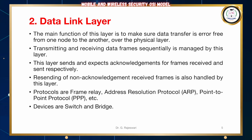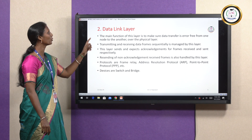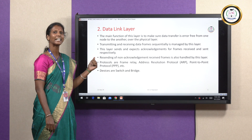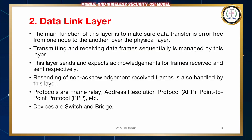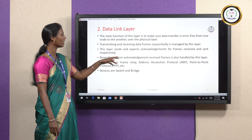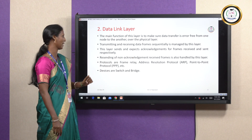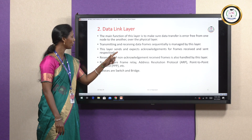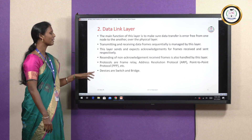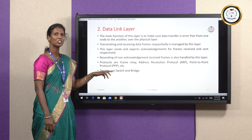Next comes the Data Link Layer. The main function of this layer is to make sure that data transfer is done in error-free mode when it's done from one node to another over the physical layer. Transmitting and receiving data frames sequentially is managed by this layer. This layer sends and expects acknowledgement for frames received and sent respectively. If any frames are missed out, resending of non-acknowledgement received frames is also handled by this layer. Protocols are Frame Relay, Address Resolution Protocol (ARP), Point-to-Point Protocol (PPP), etc. The devices used in this Data Link Layer are switches and bridges.